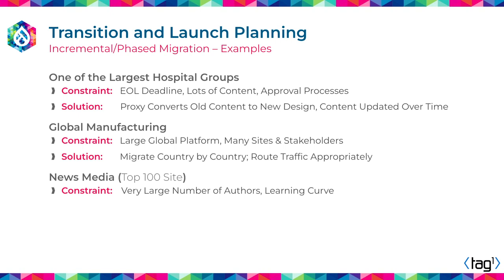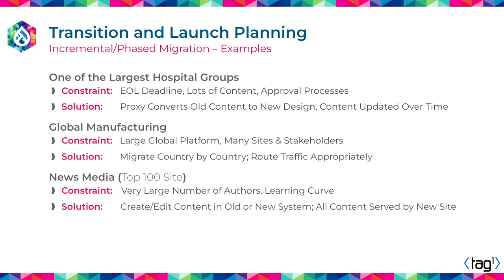A news media site had a ridiculously large number of contributors internally, third-party contributors, and user-generated content. They were really worried because their publishing system was the lifeblood of their company — if they had problems with users creating content, it would have a material impact. So we created a system that allowed them to create and edit content on both the old site and the new site simultaneously, with everything served through the new site. That gave us plenty of time to educate and train everybody. Content production went up dramatically very quickly, leading to explosive growth for that organization.